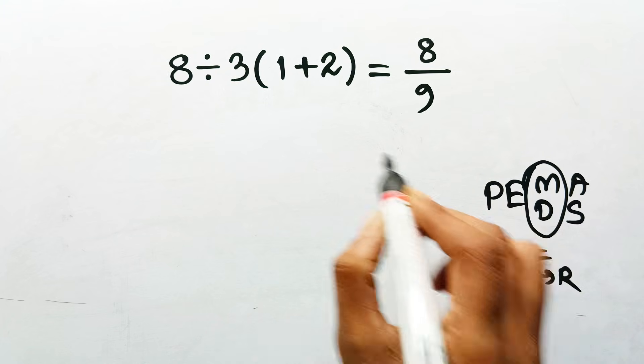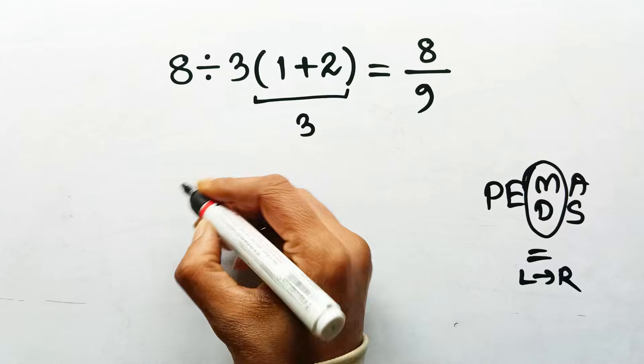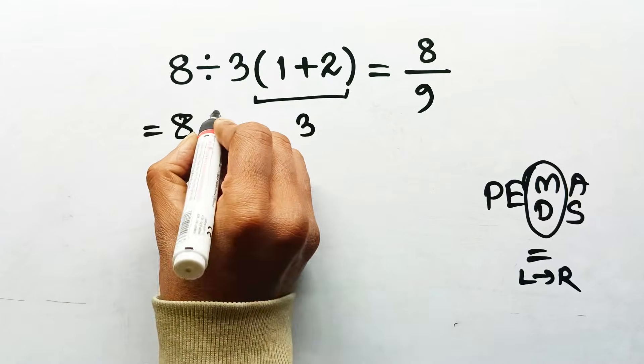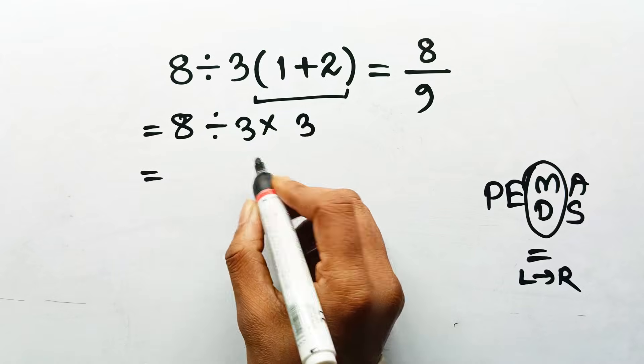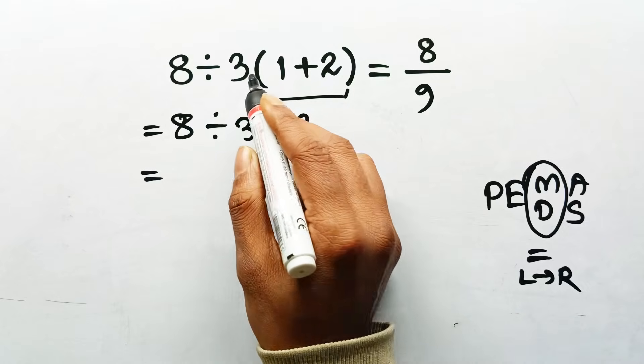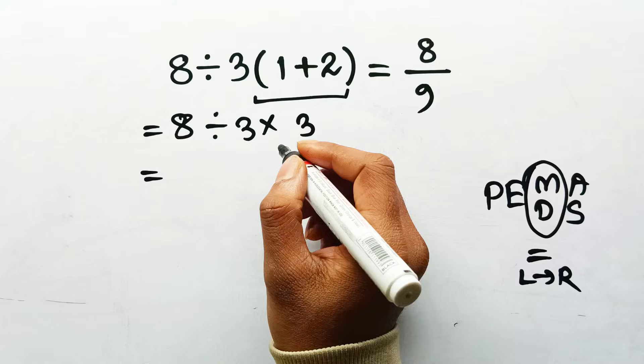So yes, parentheses first. Inside the parentheses, 1 plus 2 equals 3. Now rewrite the expression cleanly. 8 divided by 3 times 3. Notice something important? That 3 next to the parentheses wasn't magical glue. It's just multiplication, nothing more. No secret brackets, no special privileges.